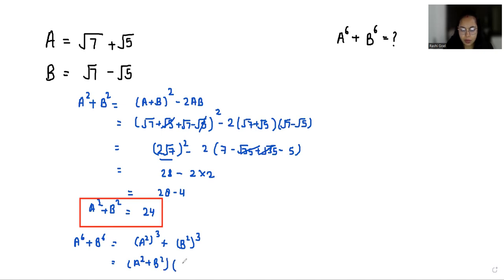Let's write the next step. A square plus B squared times A power 4 negative A square B square plus B power 4, which is A square plus B square times, I am going to add or subtract 2 A square B square to make the formula. This is A power 4 negative 2 A square B square negative A square B square.